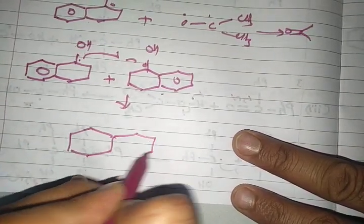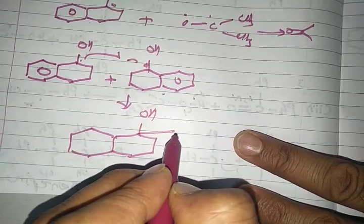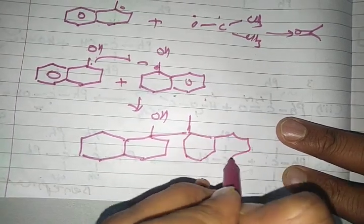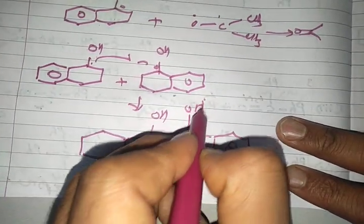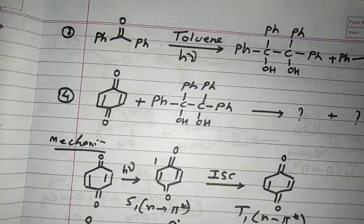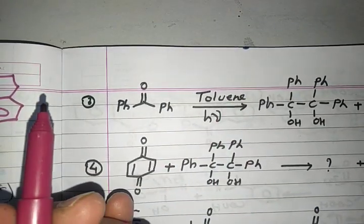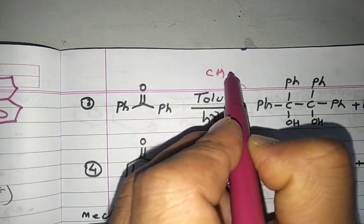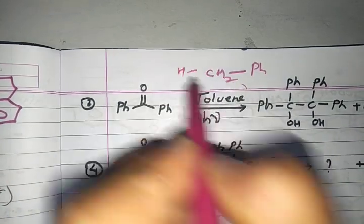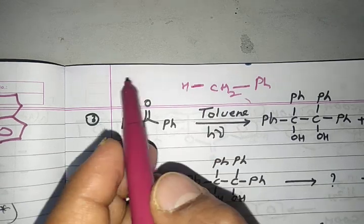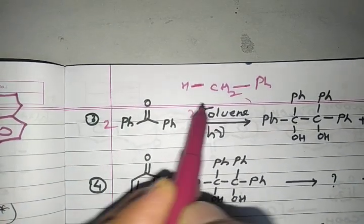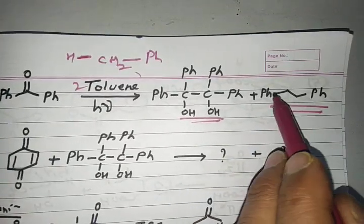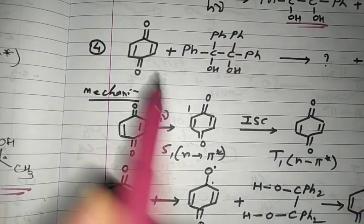You can find these questions in university exams and also in computer-based exams asking you to predict the product, so you should be very clear about this. One more reaction: toluene can also be used as a hydrogen donor, just like isopropyl alcohol in the last example. When you use toluene, benzopinacol will form and toluene will give 1,2-diphenylethane as the other product.